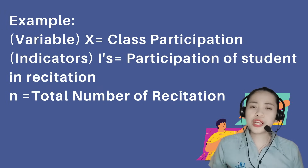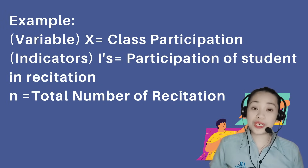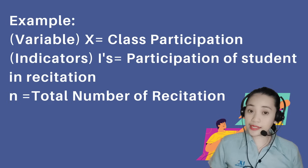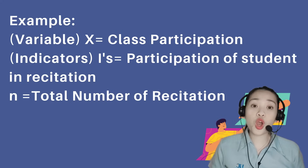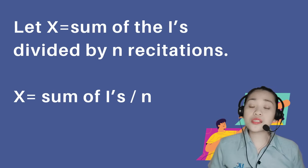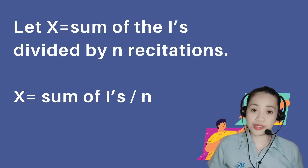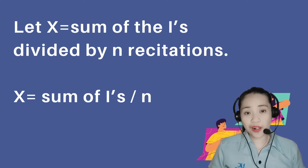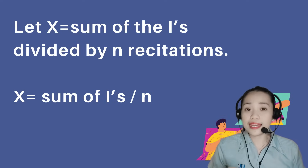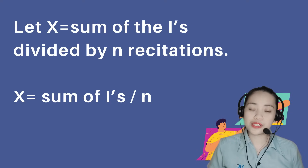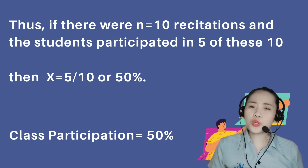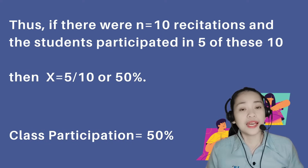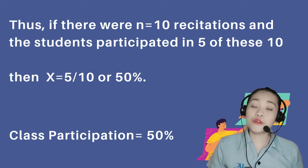For example, for the variable class participation — represented by X — we can let the indicators (I's) represent the participation of a student in the total number of recitations (N). So, X equals the sum of the I's divided by N. Thus, if the total number of recitations is equal to 10 and the student's indicated participation is equal to 5, then X equals 5 divided by 10, or 50%. Therefore, the class participation of the student is only 50%.